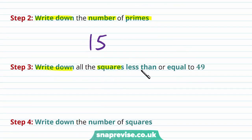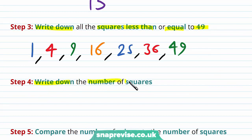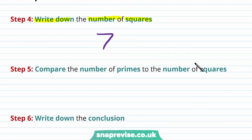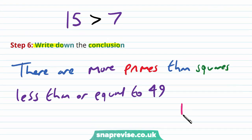Next, we write down all the square numbers less than or equal to 49. The square numbers in this set are: 1, 4, 9, 16, 25, 36, and 49. Counting these, there are precisely 7 squares. Comparing the two: the number of primes, 15, is strictly greater than the number of squares, 7. Therefore we have proved our conjecture that there are more primes than squares less than or equal to 49.